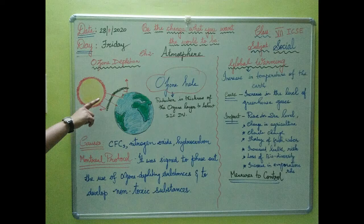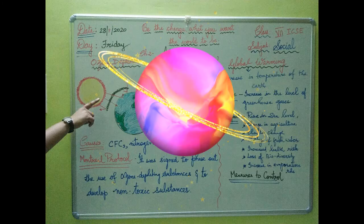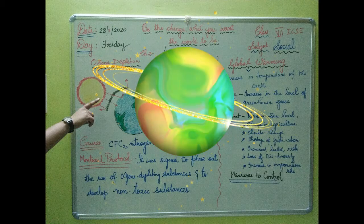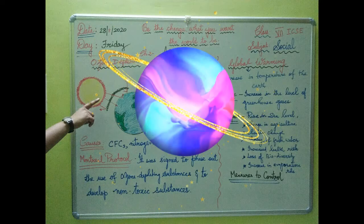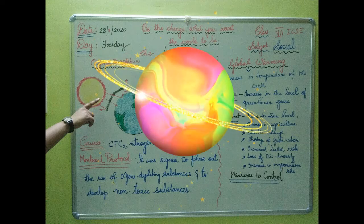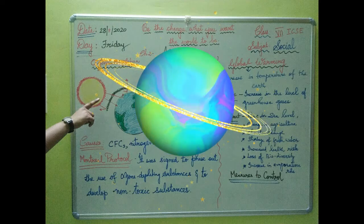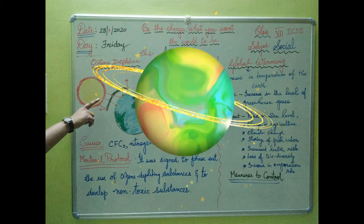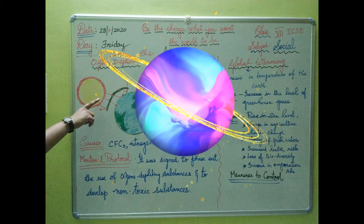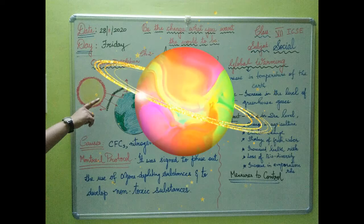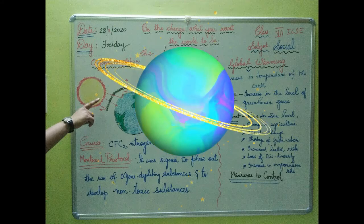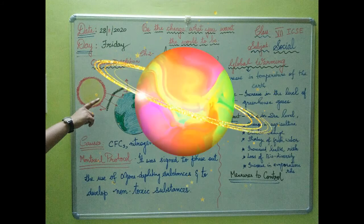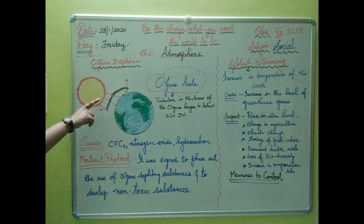Next in this lesson we will see global warming and ozone depletion. Under global warming, we will see what is global warming, its causes, impact, and measures to control it. Under ozone depletion, we will look at the ozone hole, its causes, and the Montreal Protocol — why it was signed.